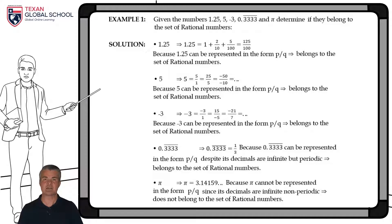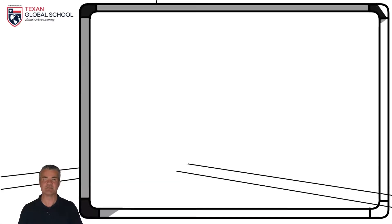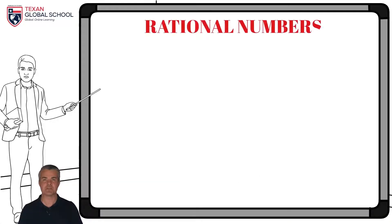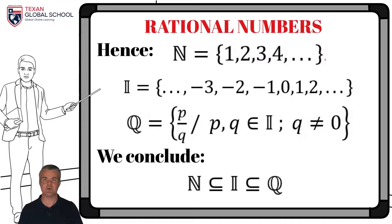Finally, the number pi is not a rational number since it has infinite non-repeating decimals. There is no way to express it as a fraction since its value is 3.14159 to infinity. In this way, analyzing the sets of the natural, integer, and rational numbers, we conclude that the natural numbers are a subset of the integers. In turn, the integers are a subset of rational numbers.